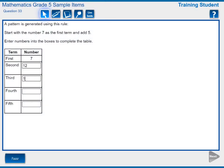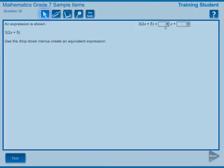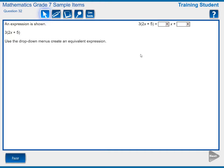In this grade 5 item, students must input a response in all cells in order to move to the next item. Similarly, in this grade 7 item, students must enter a response in both drop-down menus to continue on to the next item.